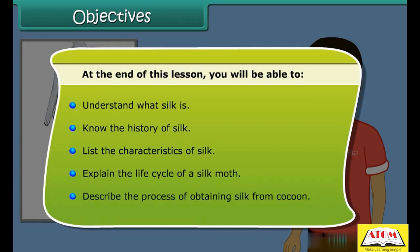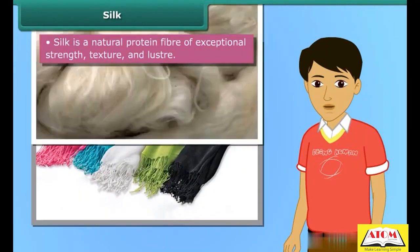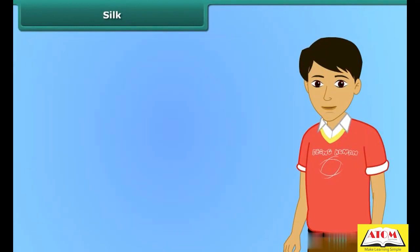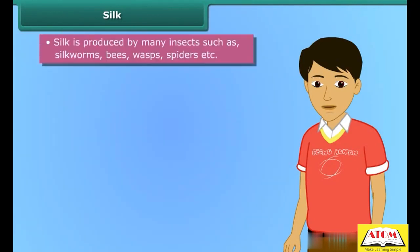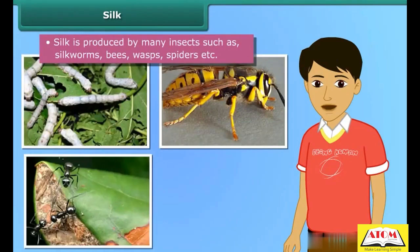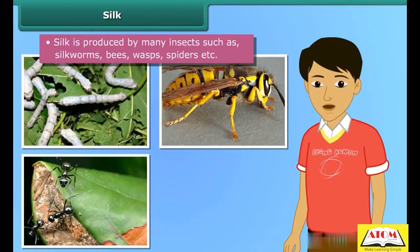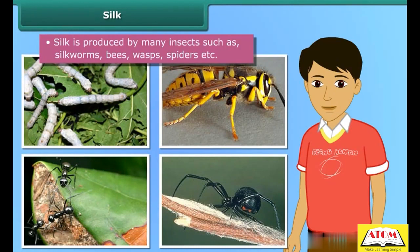Silk is a natural protein fiber of exceptional strength, texture, and luster. The shimmer of silk fiber is the result of its triangular prism-like structure. Silk is produced by many insects such as silk worms, bees, wasps, and ants that use it for building their nests. Spiders also produce silk, but only the silk produced by silk worms is processed into silk fabric.